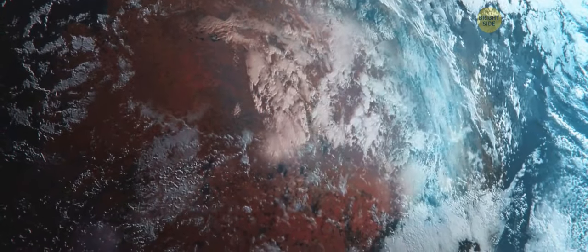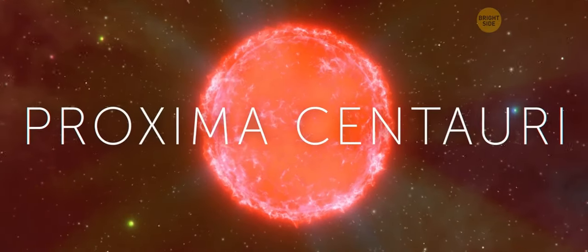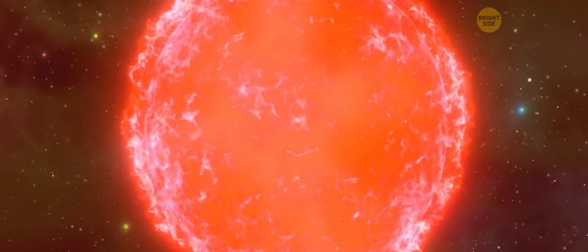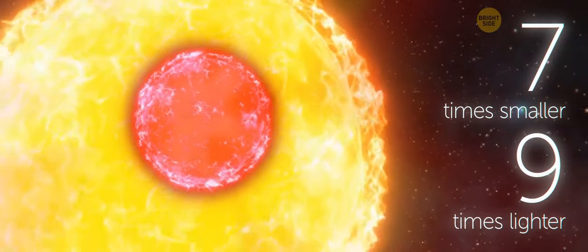Okay, let's let our planet cool down a bit and put Proxima Centauri in the center of our solar system. It's not a red giant, but a red dwarf. This star is almost seven times smaller than the sun, and almost nine times lighter.